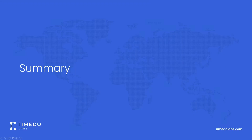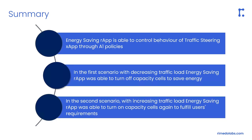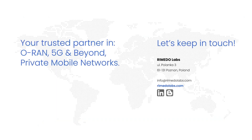Let's sum up this demonstration. The presented energy saving RAP was able to control the behavior of the traffic steering XApp through A1 policies. In the first scenario with decreasing traffic load, the RAP was able to turn off capacity cells to save energy. In the second scenario with increasing traffic load, the RAP was able to turn on capacity cells again to fulfill user requirements. Thank you for your attention and best regards from the Remedo Labs team.